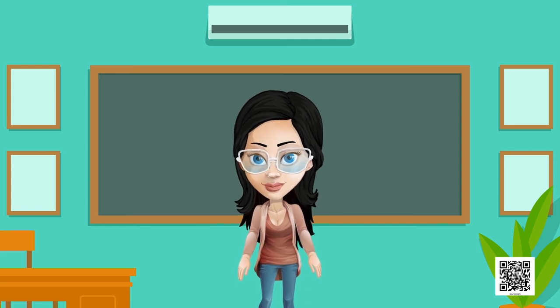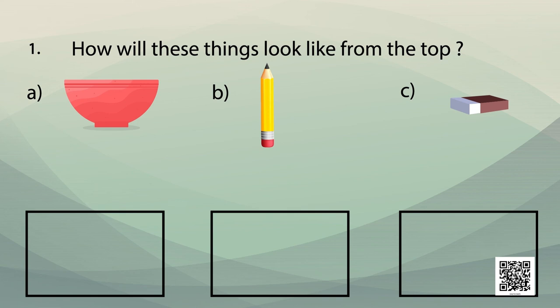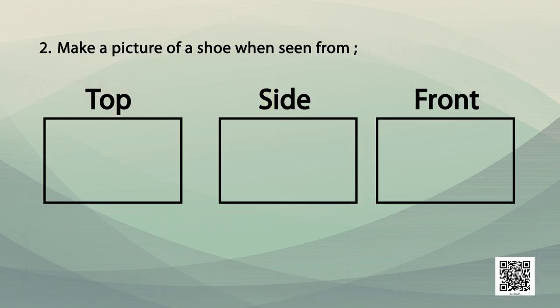Now let's do some questions related to the chapter. Question number one: in the given picture you see three objects — a bowl, a pencil, and a rubber. How will these things appear if you look at them from above? You will have to make the picture. What does a bowl look like from above? How does a pencil look from above? How does a rubber or eraser look from above?